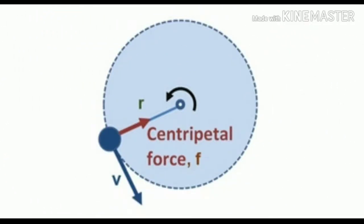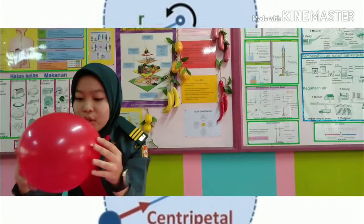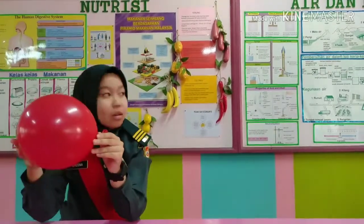Daya sentripetal, ataupun daya memusat, merupakan daya yang membolehkan sesuatu objek bergerak mengikut haluan melengkung. Daya ini sentiasa ortogonal dengan halaju objek, menghadap arah pusat kelengkungan seketika haluan. Terminologi daya sentripetal berdasarkan daripada Latin: sentrum bermaksud tengah, dan petere bermaksud menghadap ke — yang bermaksud daya tersebut berarah ke bahagian tengah bulatan haluan. Menurut Isaac Newton, daya sentripetal merupakan sesuatu badan yang berpusat atau dituju ke tengah-tengah bulatan.